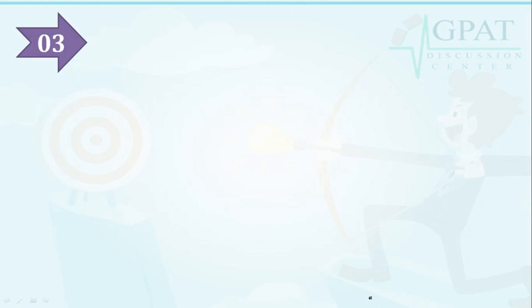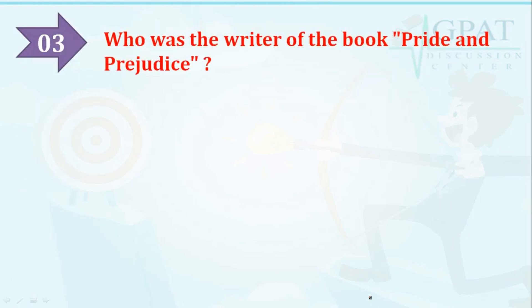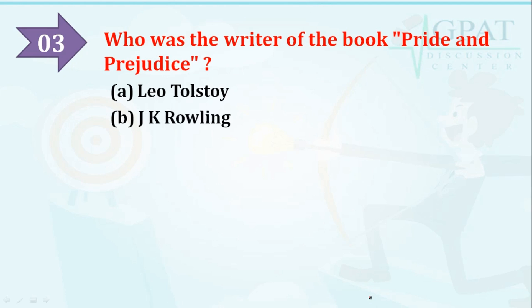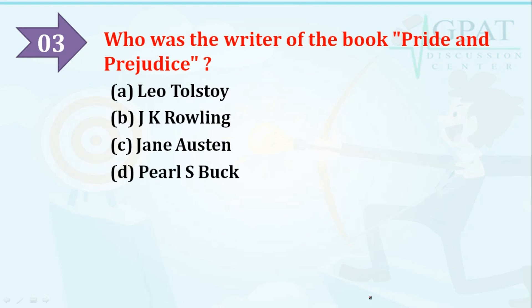Question number three: who was the writer of the book Pride and Prejudice? The options are: Leo Tolstoy, J.K. Rowling, Jane Austen, or Paulo Coelho. The right option is Jane Austen.